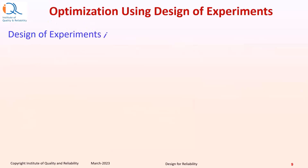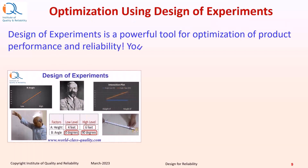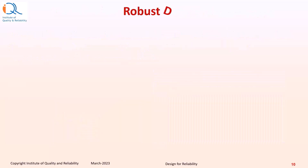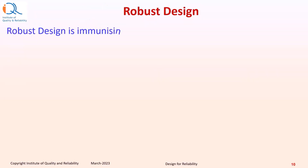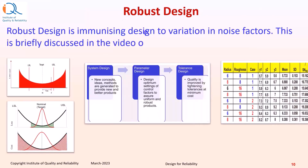Design of experiments is a powerful tool for optimization of product performance and reliability. You can learn about design of experiments in the following videos. As we have learned, robust design is immunizing design to variation in noise factors. This is briefly discussed in the video on this subject.